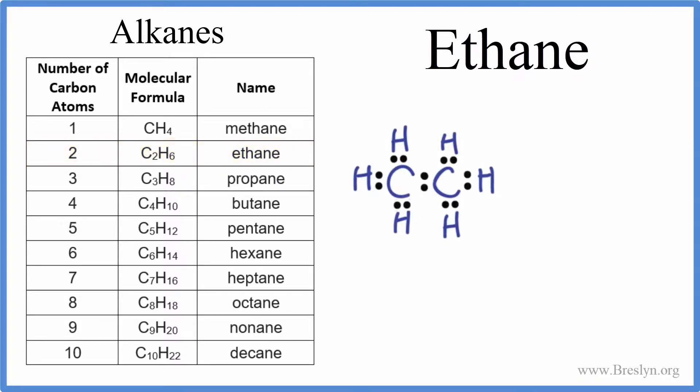Here's the Lewis structure for ethane: C2H6. We have two carbons with single bonds, and the hydrogens are on the outside.